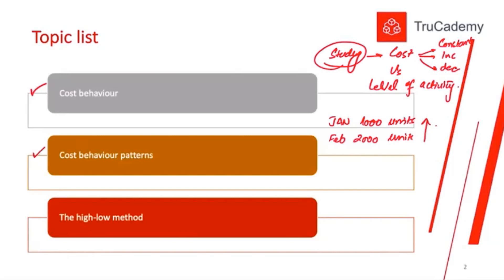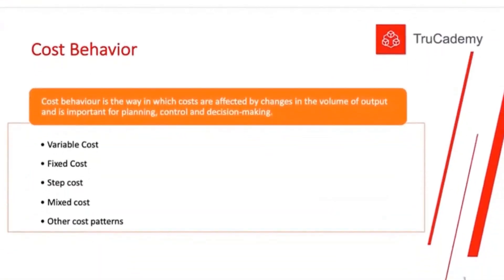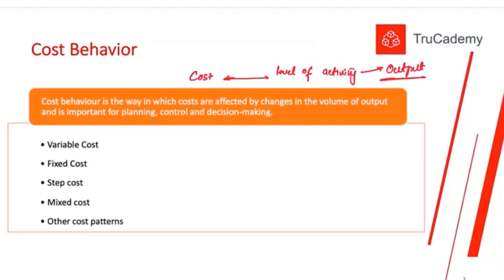After cost behavior, we'll discuss cost behavior patterns. Last but not least, very important for the MA2 course is the high-low method, which basically applies to mixed costs. Cost behavior is the way in which costs are affected by changes in the volume of output, and it is important for planning, controlling, and decision making. When the level of activity changes — whether output units, output hours, or anything else — we study how cost will change.